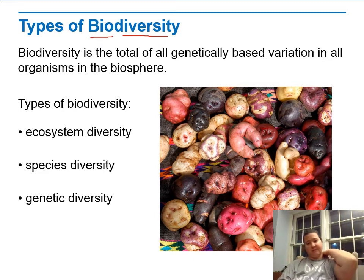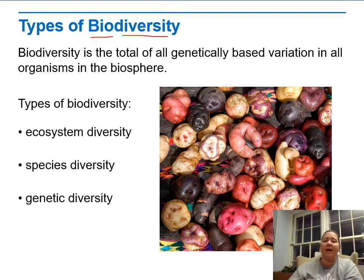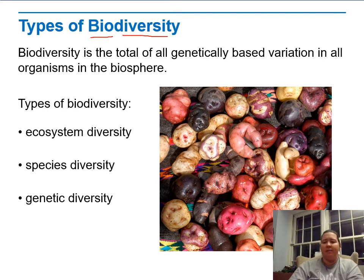Here is a picture of potatoes — all different kinds of potatoes. We don't eat all of these different types, but they can be used for different things. There's also the concept of heirloom varieties, which tries to preserve species and genetic diversity. Species and genetic diversity often go hand in hand because the more species you have, the more individuals you have, and the more genetics you have. Ecosystem diversity is about the habitats and different areas in which organisms can live.